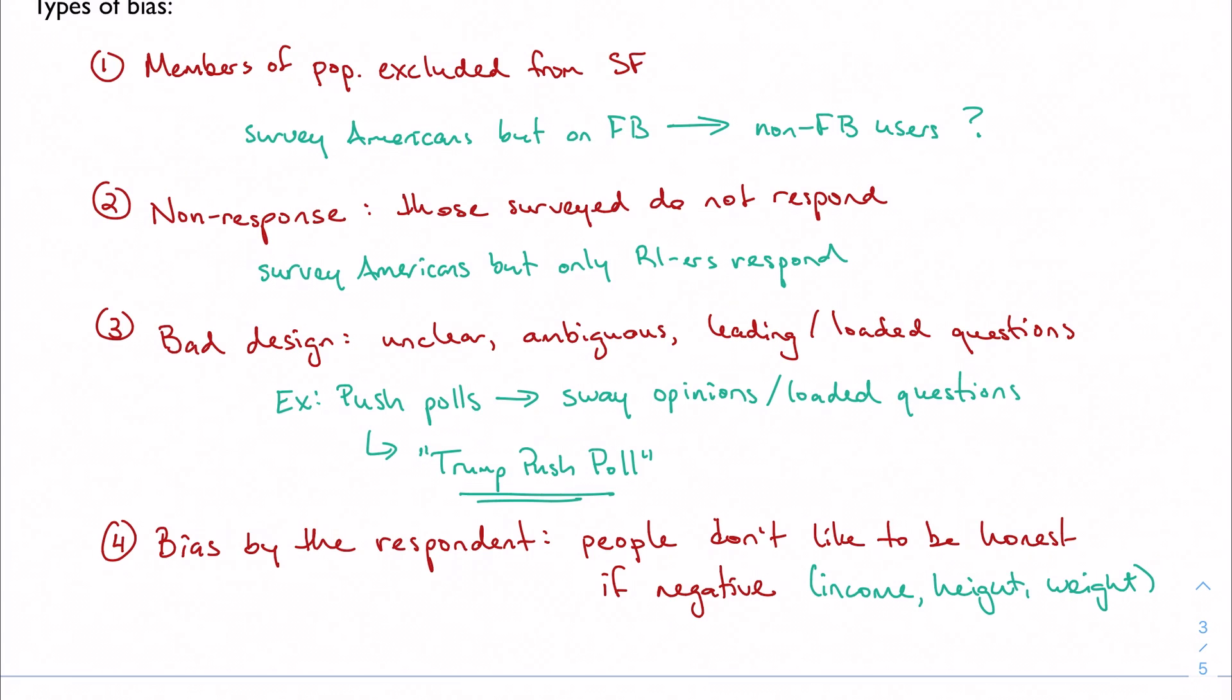So these are, there are more types of bias than this, but these are the four the book covers. These are the four that I think a lot of your examples will fall into.